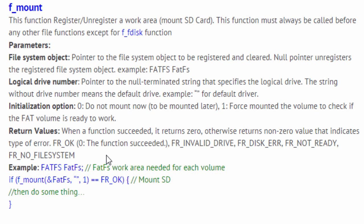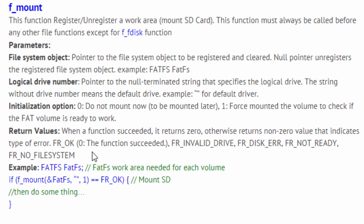The return values of f_mount: when the function succeeds it returns zero; otherwise it returns a non-zero value indicating the type of error. FR_OK (zero) indicates a successful call. Other return values include FR_INVALID_DRIVE, FR_DISK_ERR, FR_NOT_READY, and FR_NO_FILESYSTEM. In the example, we first declare a FatFS work area — one is needed per volume. We then call f_mount with the FatFS object, the default drive string, and initialization option one to force-mount and check if the volume is ready. If it returns FR_OK, the call was successful.